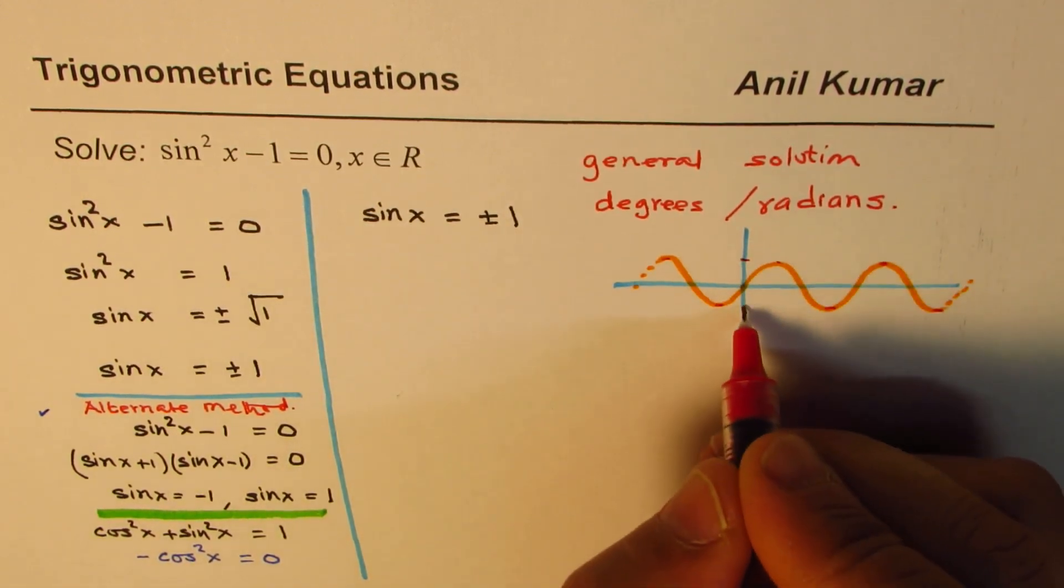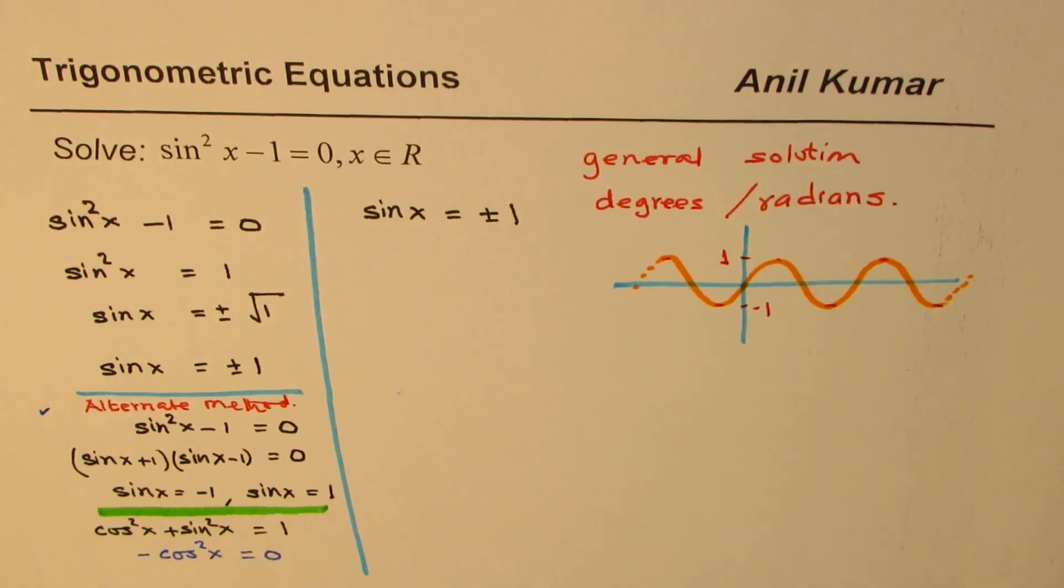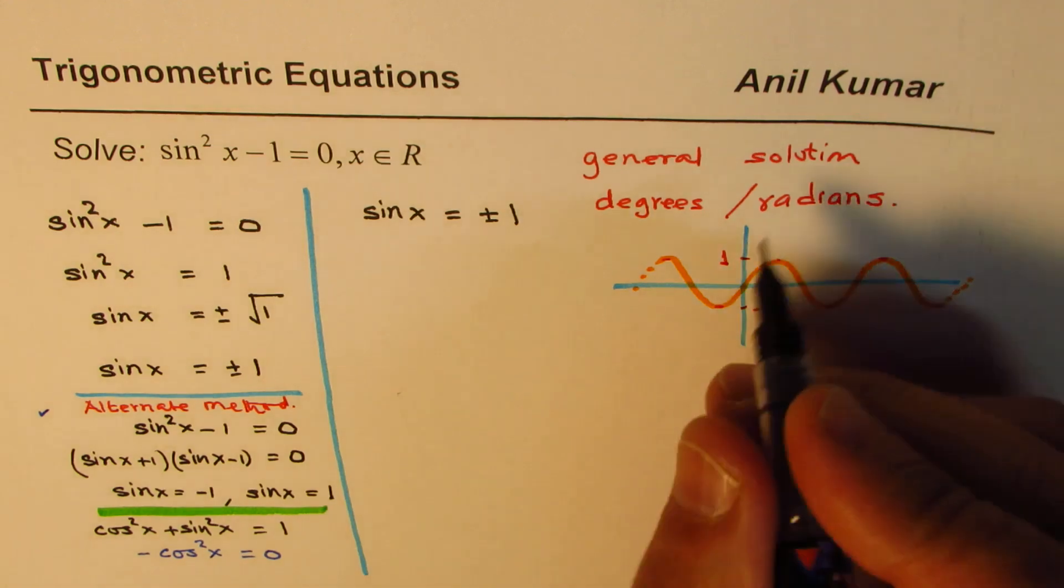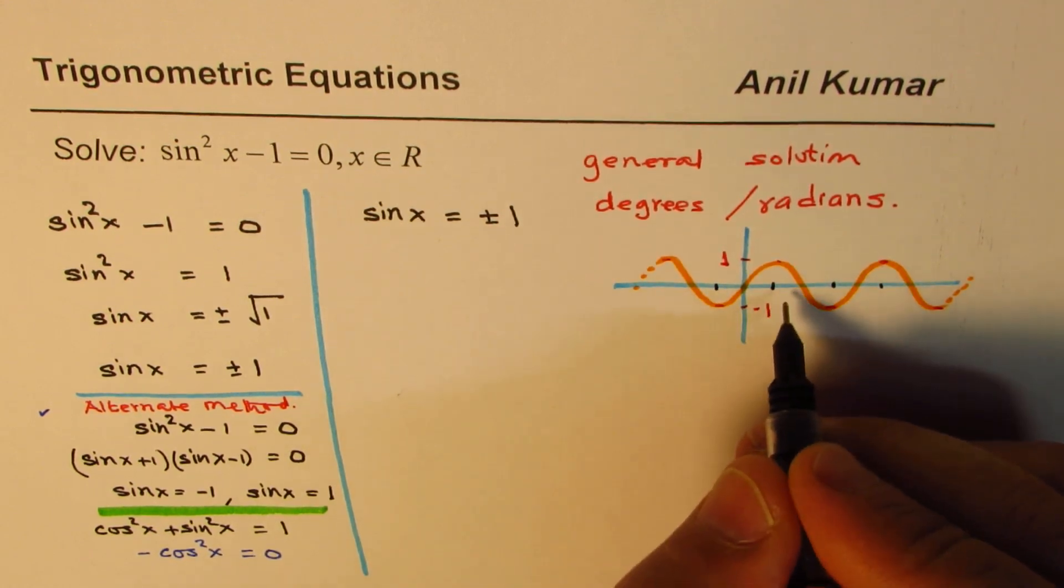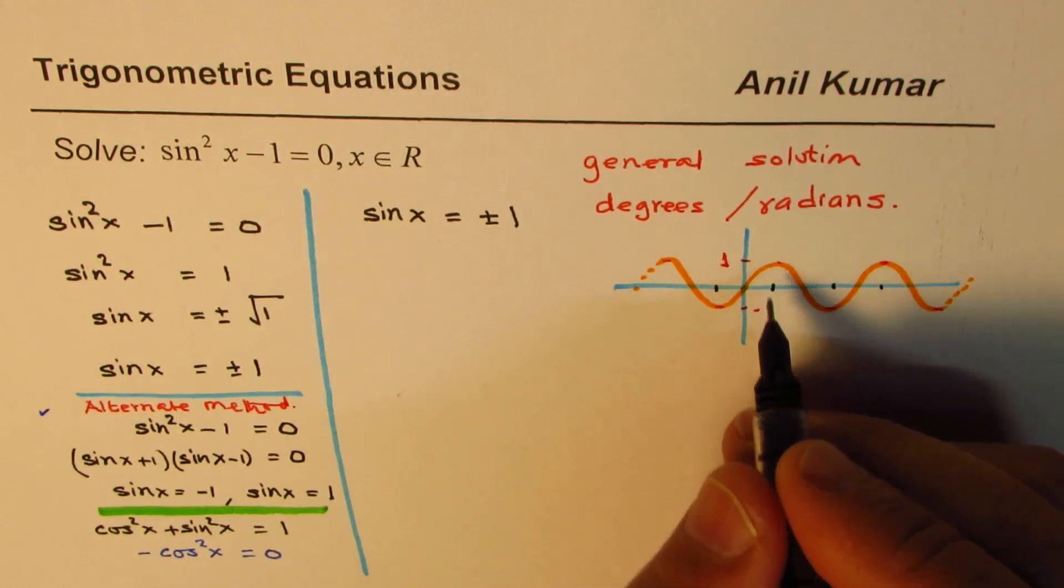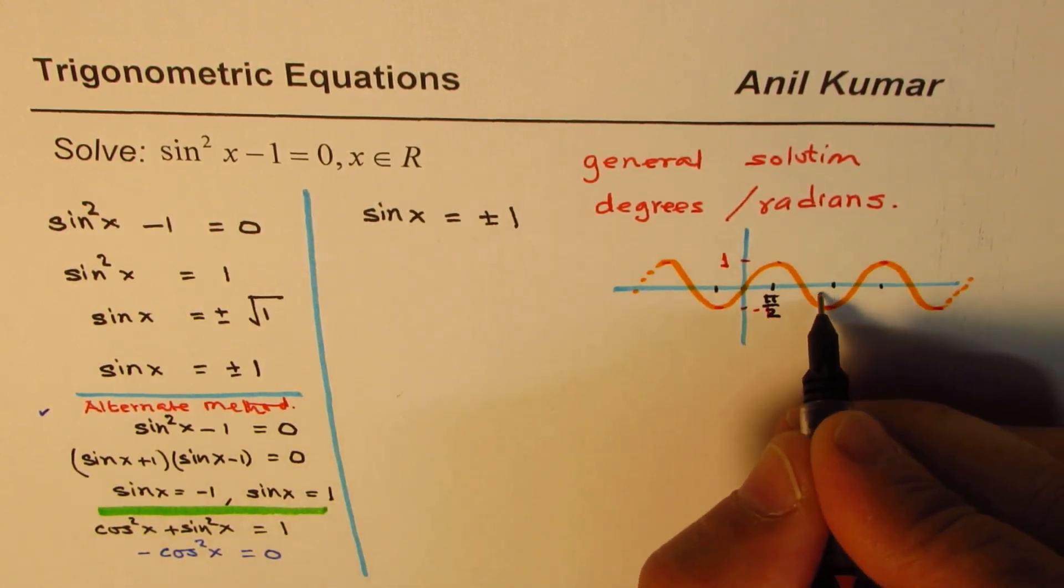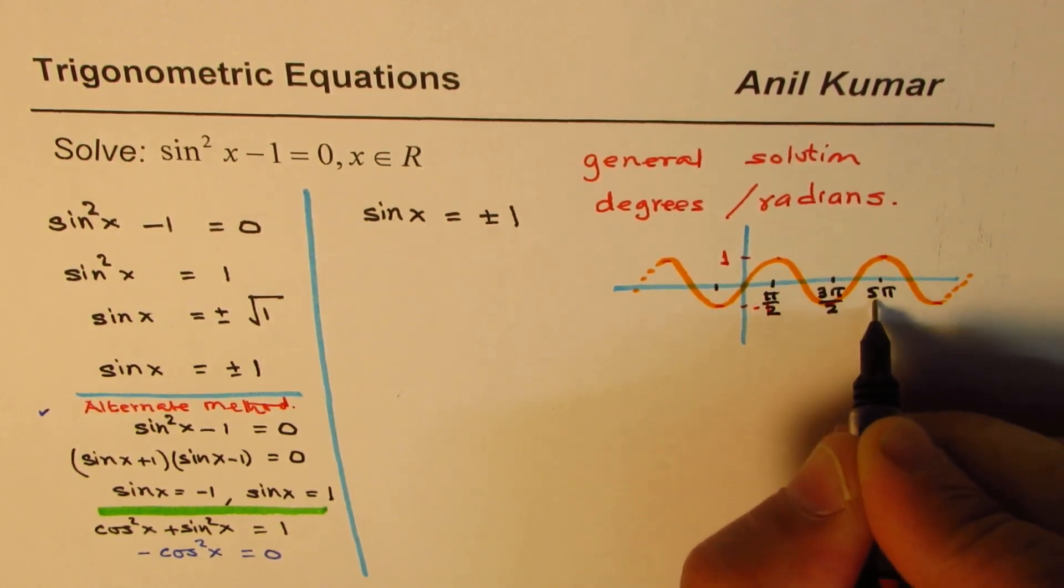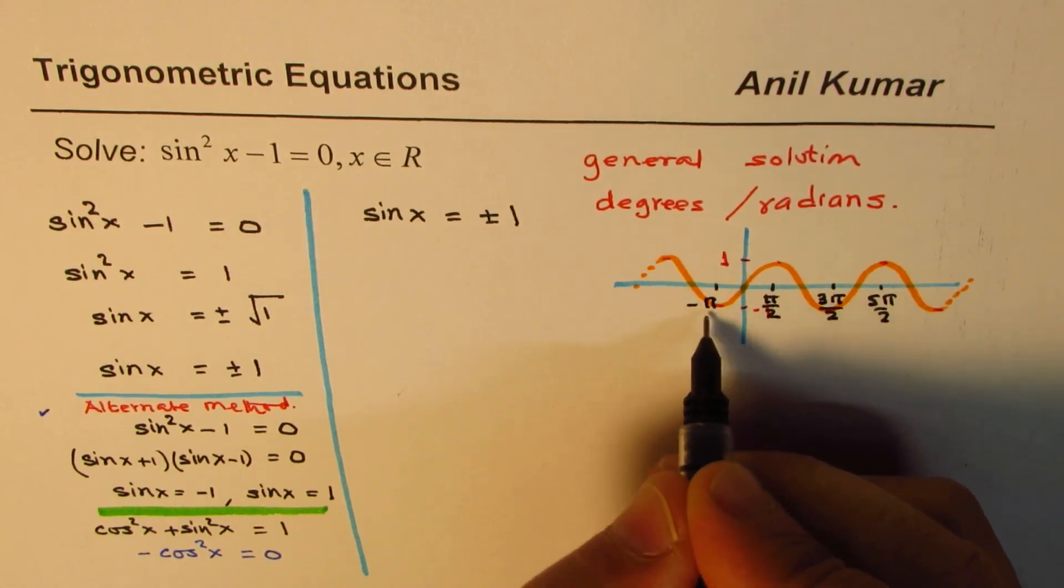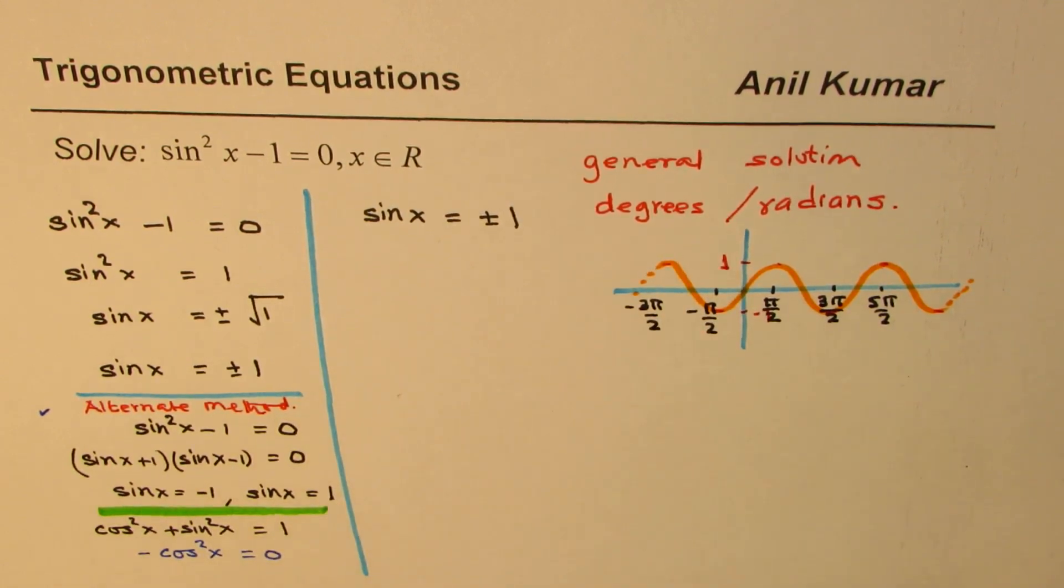We are looking for all these points where it is either plus 1 or minus 1. Now, clearly, you can see that these points are at multiples of pi by 2. So, this one is pi by 2. This one is 3 pi by 2. This is 5 pi by 2. Here it goes as minus pi by 2, minus 3 pi by 2. That becomes the solution for sine x equals to plus minus 1.